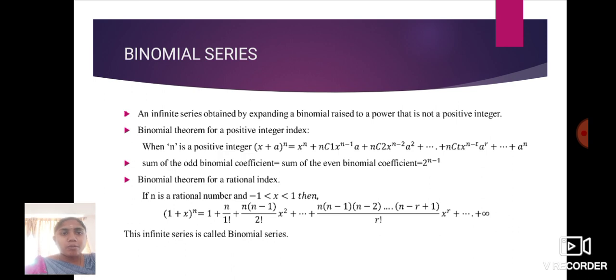Binomial theorem for a rational index: If n is a rational number and -1 < x < 1, then (1 + x)ⁿ = 1 + n/1! + n(n-1)x²/2!